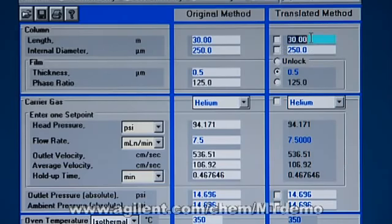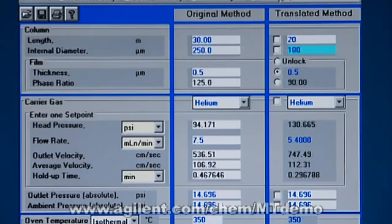And so I put in 20 meters, I put in 180 micron, or 0.18 millimeter ID, and now I don't want the same film thickness, I want the same phase ratio. If I click that over here to get the 125 phase ratio, now it tells me my new film thickness that I need in this column is a 0.36 film. So I know which column to buy to get the same results.